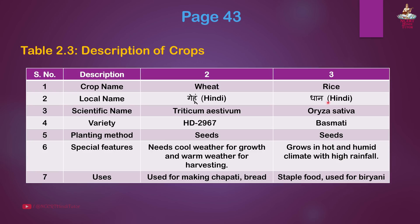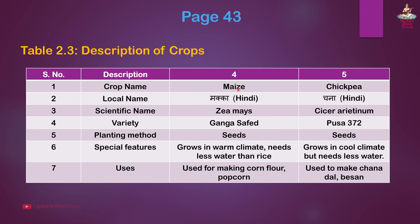Third crop: Rice. Local name: Dhan in Hindi. Scientific name: Oryza sativa. Variety: Basmati. Planting method: Seeds. Special features: Grows in hot and humid climate with high rainfall. Uses: Staple food, used for biryani.